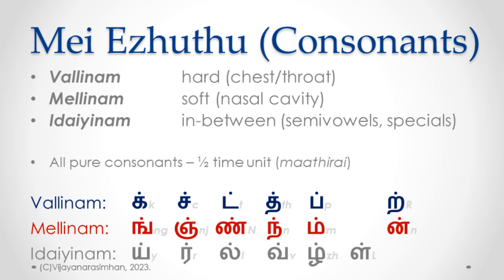The consonants are arranged in a specific sequence: like the vowels are arranged in short/long pairs, the consonants are arranged with their hard counterpart followed by the soft counterpart. This goes up to Pha/Ma. Then the Edainam letters are inserted in between, and the last two — Ra and Na — come last.